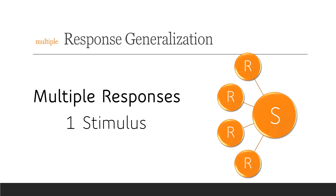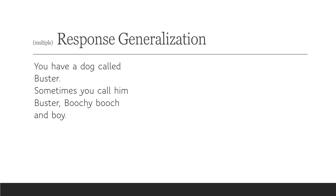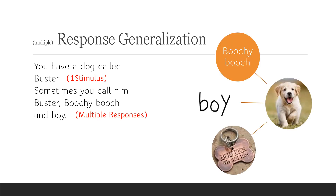You have a dog called Buster. Sometimes you call him Buster, Butchie, Butch, and Boy. We have one stimulus, which is Buster the dog, and sometimes you call him Buster, Butchie, Butch, and Boy — those are multiple responses. You have learned one response, which is 'Buster,' and now you have different variations of the same response towards the stimulus. So Buster is the stimulus, and sometimes you call him Butchie Butch, sometimes Boy, and sometimes Buster.